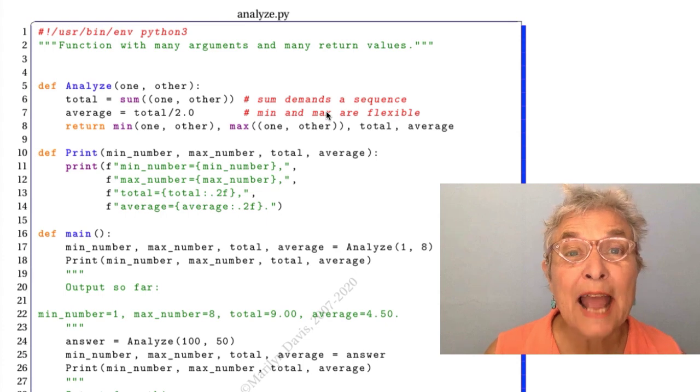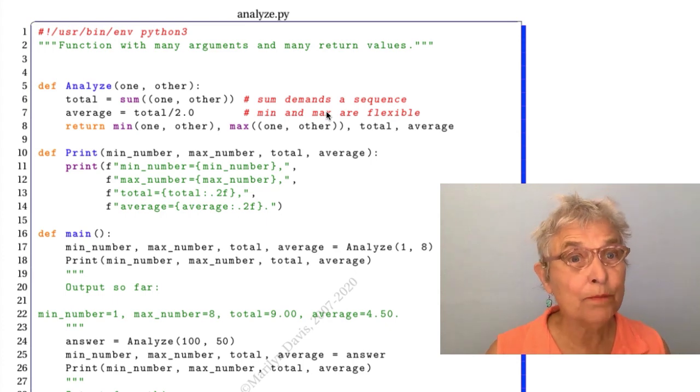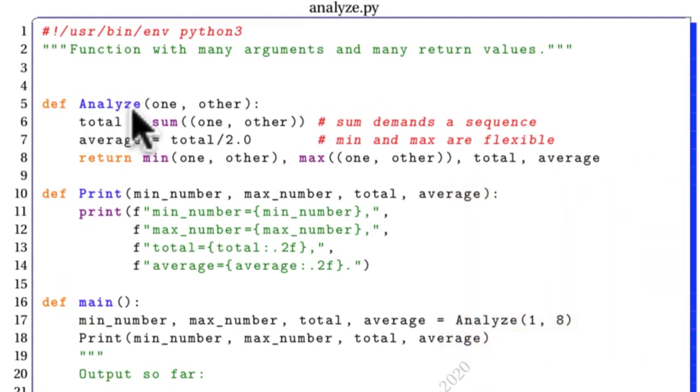First, let's take a look at the Analyze.py module. On line 5 we have our definition for Analyze where one object and another object come in and we're going to get the total of these two. So it better be that you can add them together. Interesting is that you must have a sequence go into sum. So we had to make a tuple of one another. And then we get the average. Now then we're going to return the minimum of one another. And notice here that we did not have to make a tuple out of them. We put in any number of arguments and we'll find the smallest as long as there's some definition for less than.